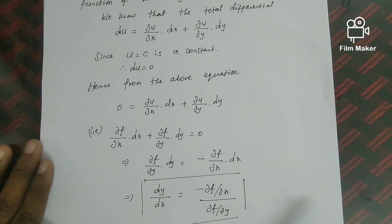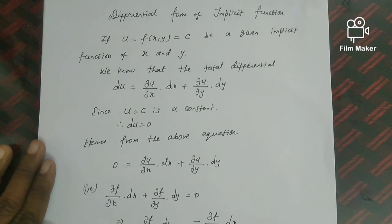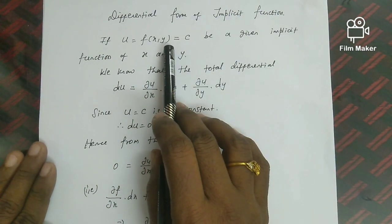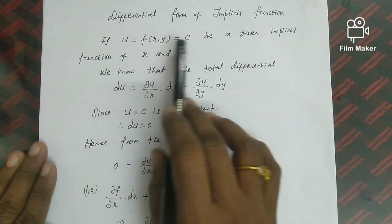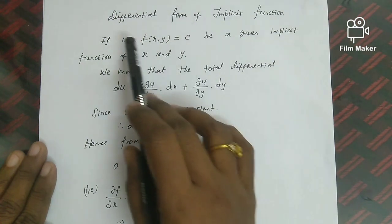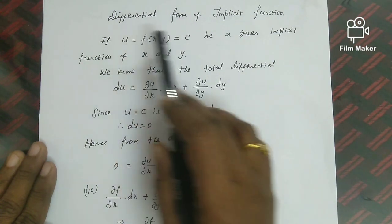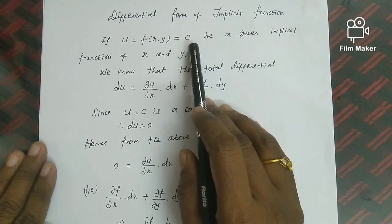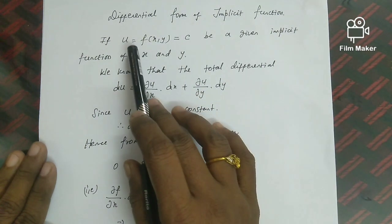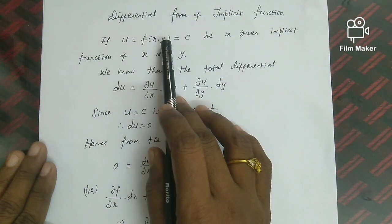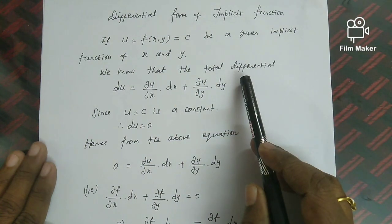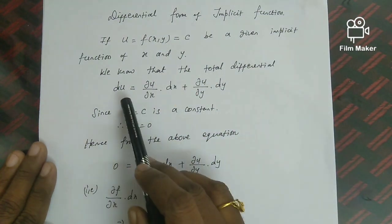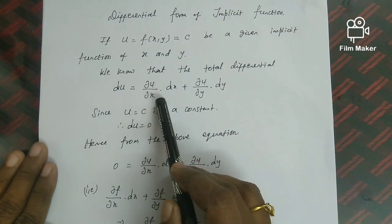So dy/dx is one result. Now there are two more questions. If u = f(x,y) = c is the function, u is a function of x and y. Now, if u is constant, we know that the total differential is equal to 0. So if u is f(x,y), we will apply ∂u/∂x in the total differential.